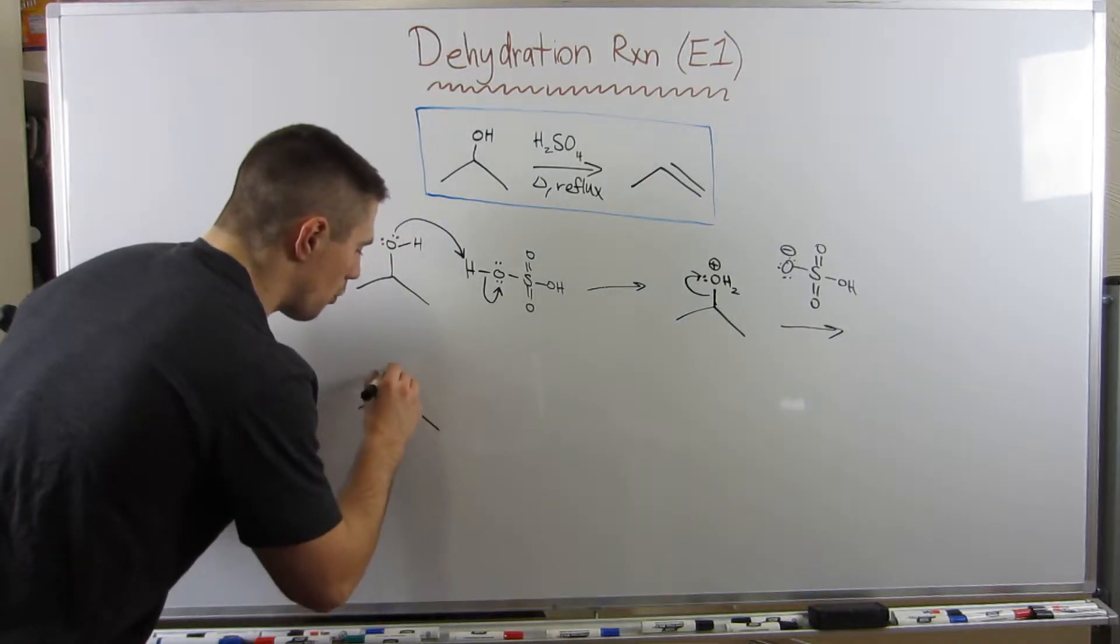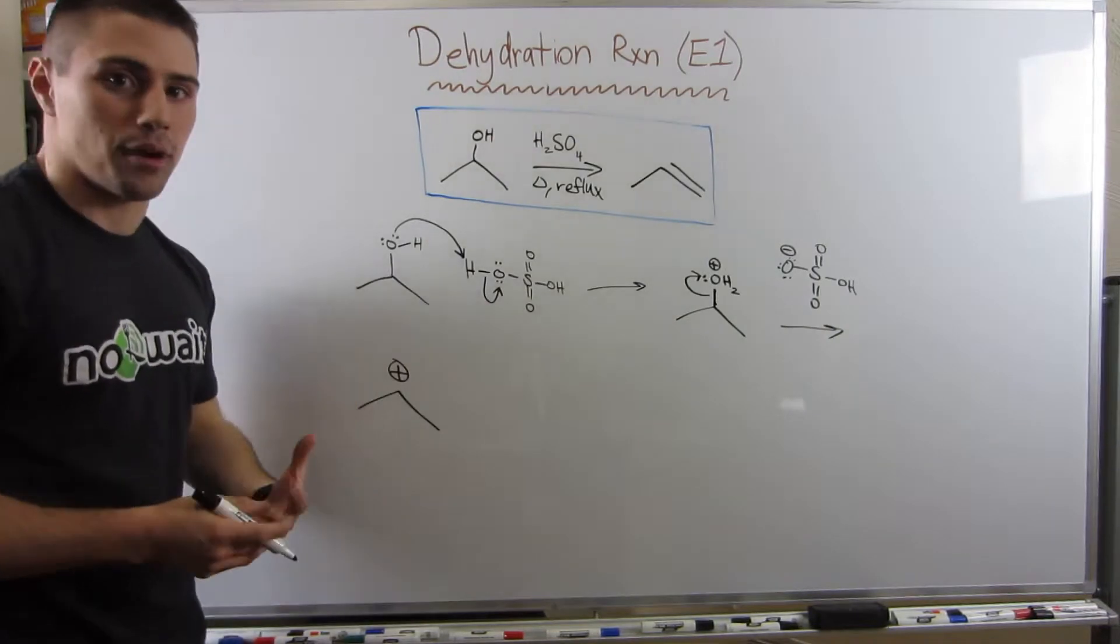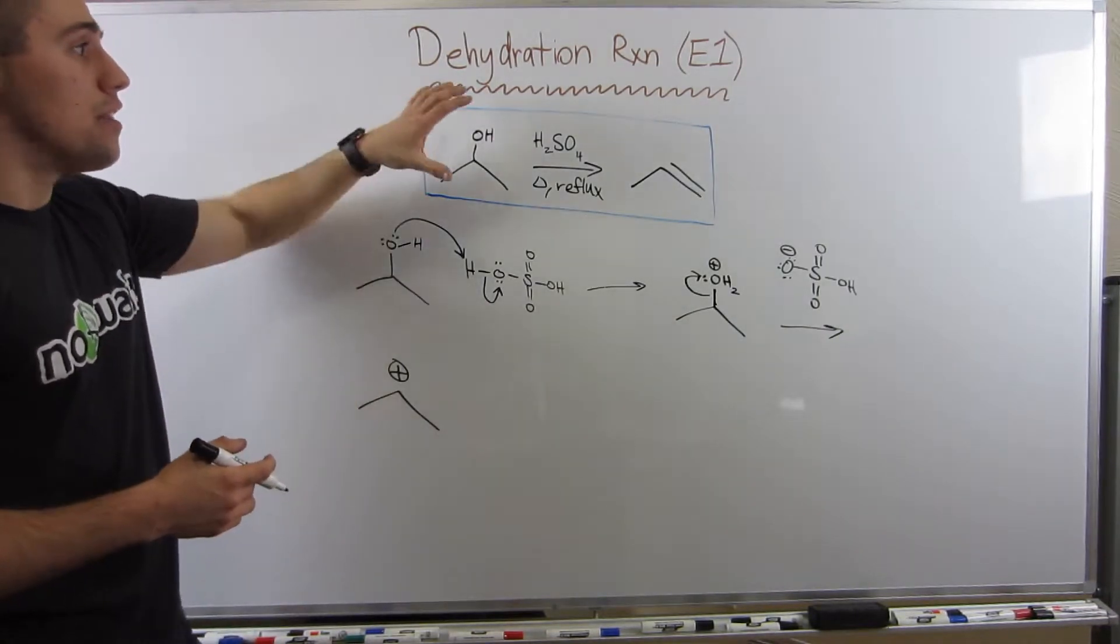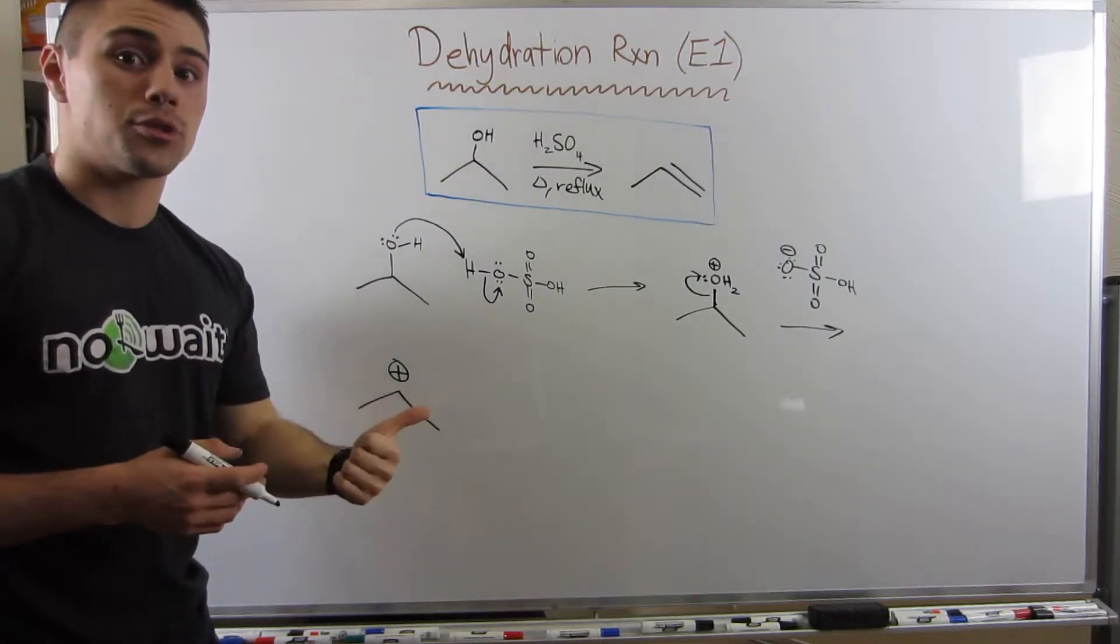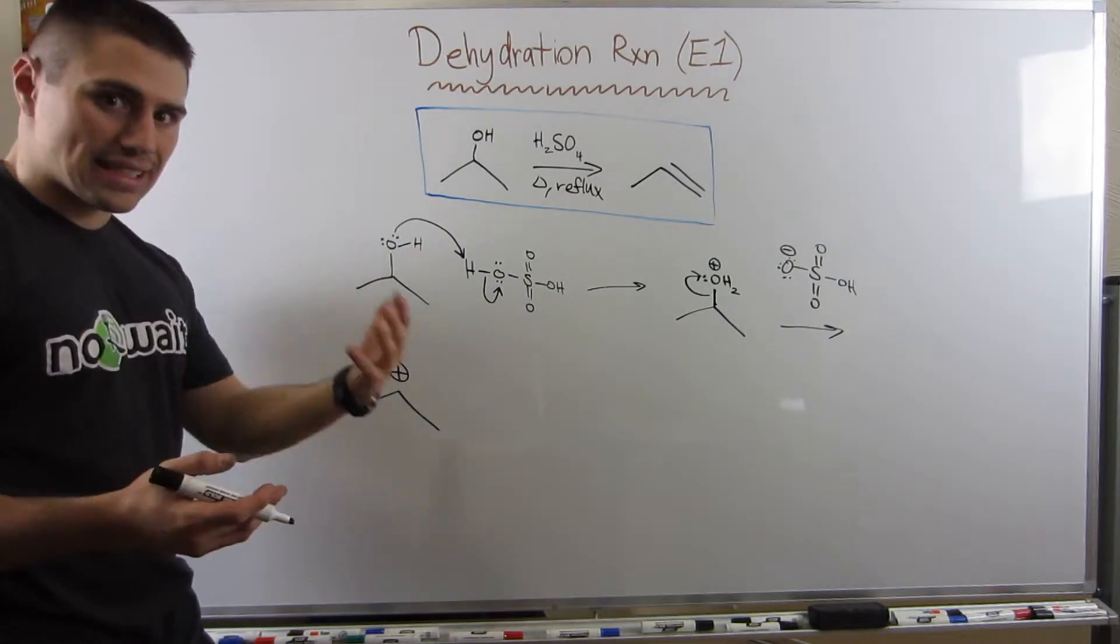Because as a leaving group, H2O, that's water, that's a stable leaving group. So remember, now that we've formed, once that group leaves, we've formed a carbocation. So now you kind of, I hinted at this in the last video, this mechanism is subject to carbocation rearrangements, both hydride and methyl.